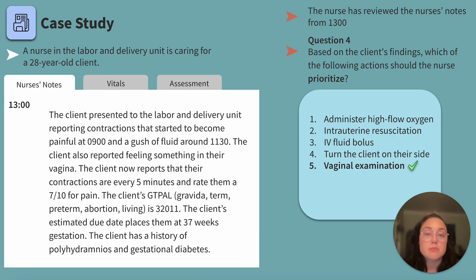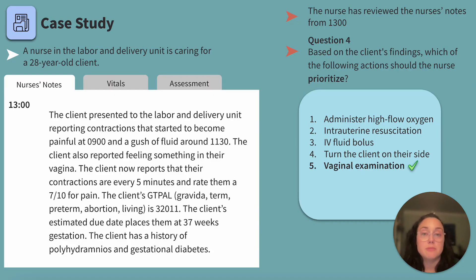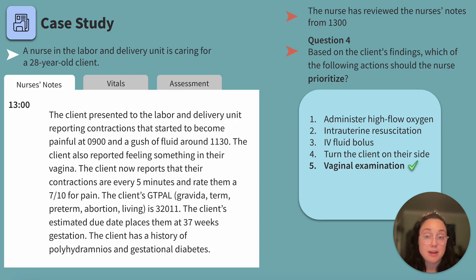Turning the client on their side would not be appropriate for cord prolapse — we want to place the client in a position that relieves pressure on the cord. Think knee-to-chest. Based on the client's findings — feeling something in their vagina, fetal heart rate changes, history of polyhydramnios, and suspected rupture of membranes — the nurse should suspect cord prolapse. Cord prolapse requires vaginal examination to assess for dilation, effacement, station, and presence of the umbilical cord. We need to assess before taking action.